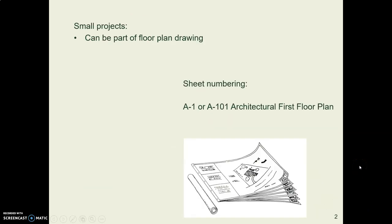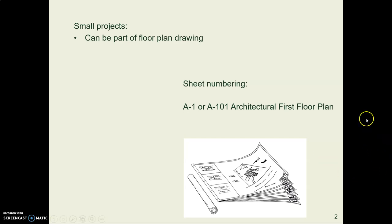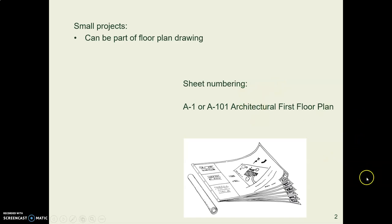If you have a small house or a small system, you don't necessarily need a separate drawing sheet. You can just make your HVAC equipment part of your floor plan. Some people do that, and in that case your sheet number is just A101 or whatever the case may be.